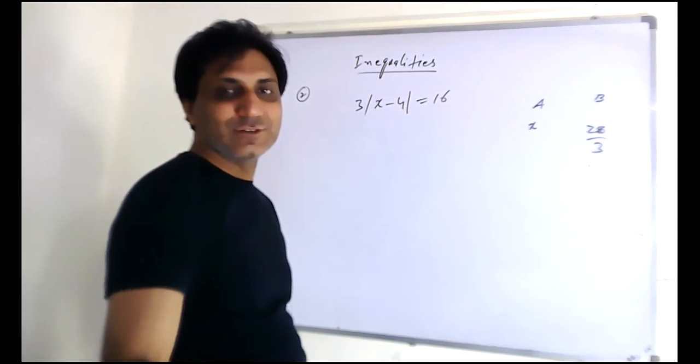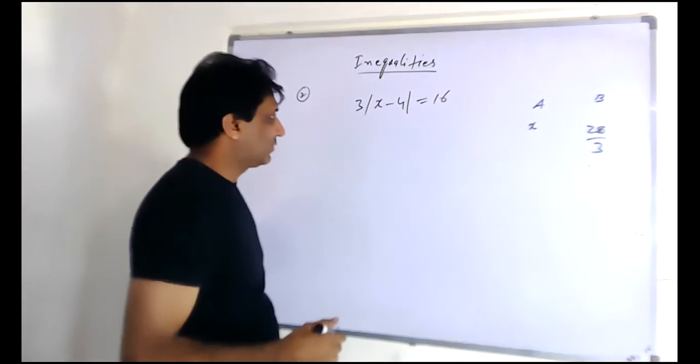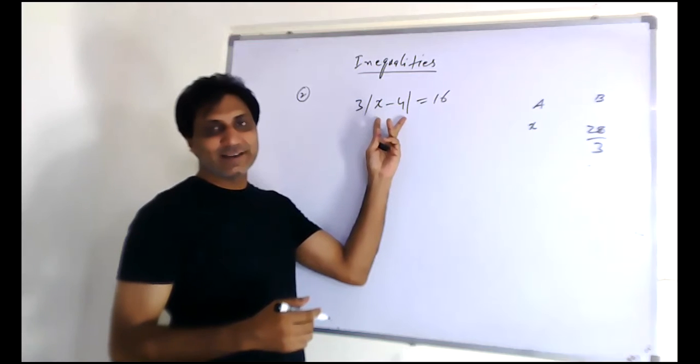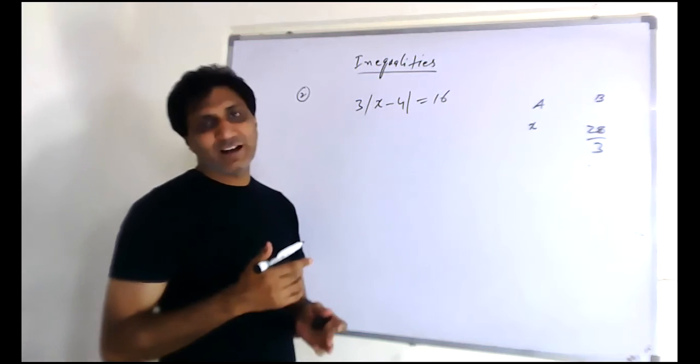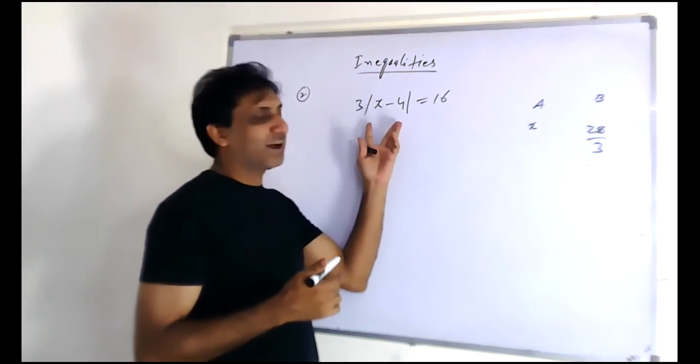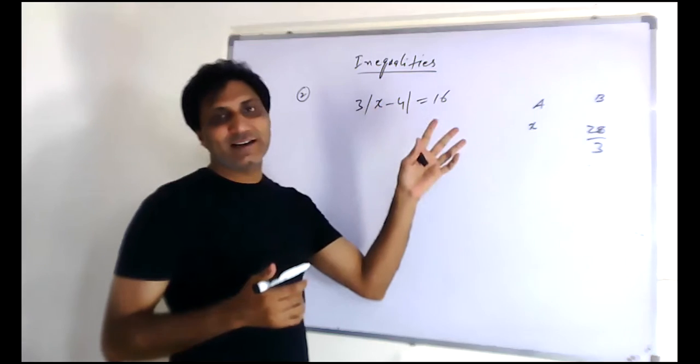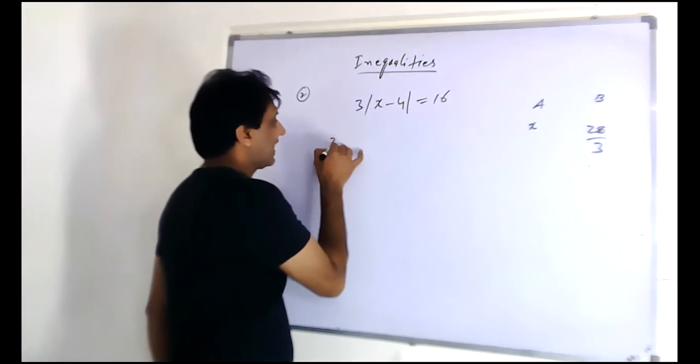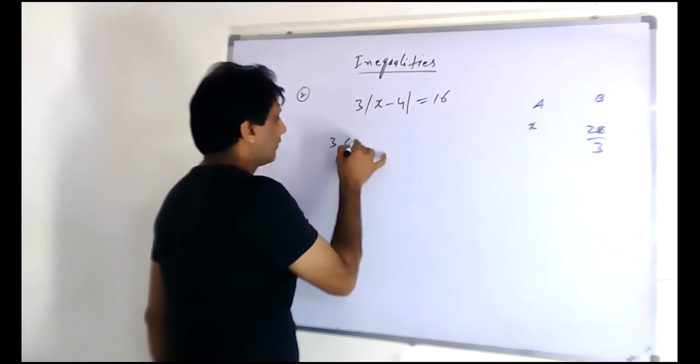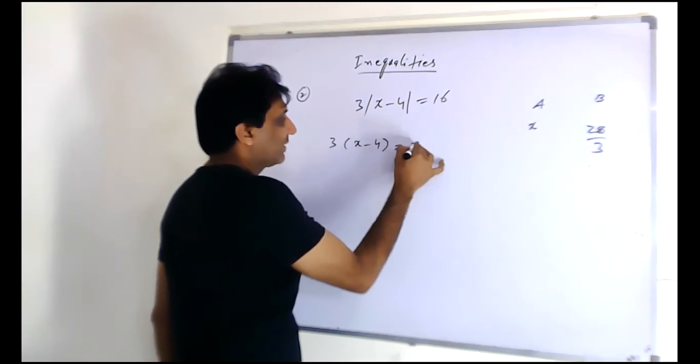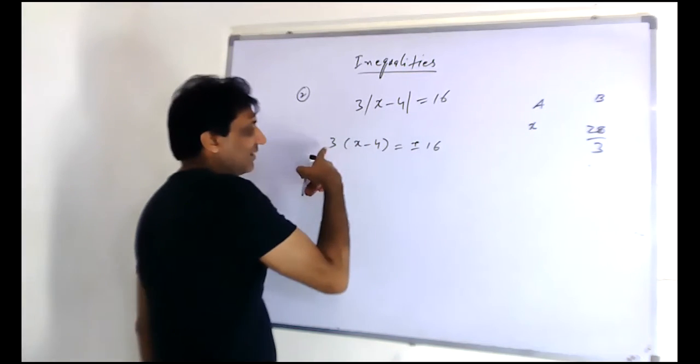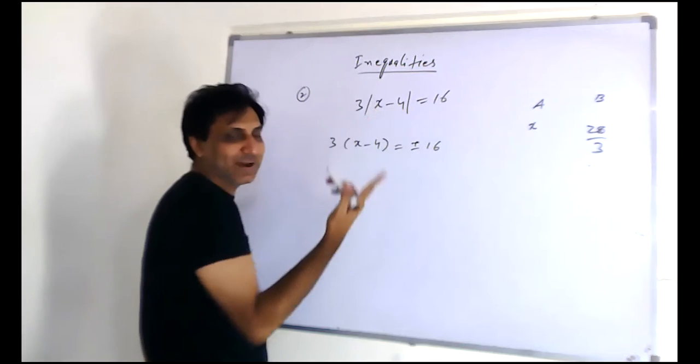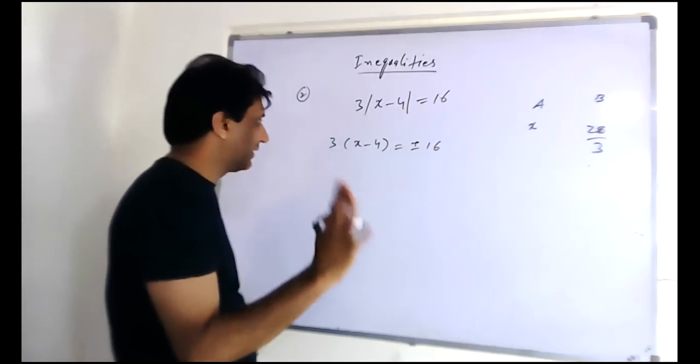Whenever it comes to absolute value, you take this either positive or negative. Sometimes people ask whether we have to put plus or minus on the left side or right side. It's the same thing, it doesn't matter. Whether you do x minus 4 equals plus or minus 16 over 3, or take the whole thing as plus or minus, it doesn't matter.